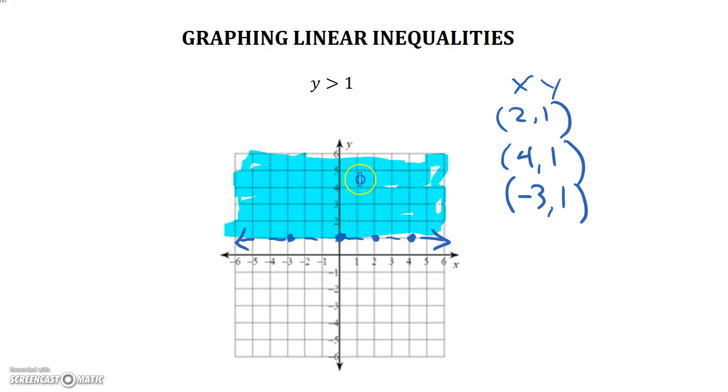Or if you wanted to, you can double check by testing our point. Again, my favorite point, 0, 0. Let's test it. And because it's not part of our shaded area, it should be false. Let's see. Let's plug in 0, 0 for x and y. 0 is greater than 1. That is a false statement. So 0, 0, this point is not a solution. And we didn't highlight it, so we're correct.